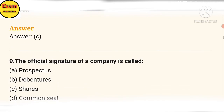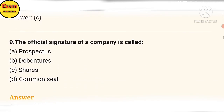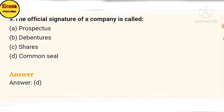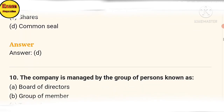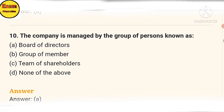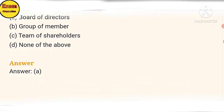Ninth question: the official signature of a company is called — the answer is option D: common seal. Tenth question: the company is managed by a group of persons — the answer is option A: the board of directors.